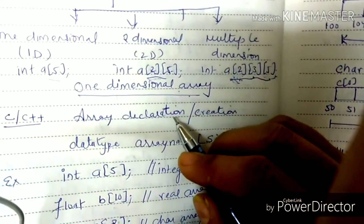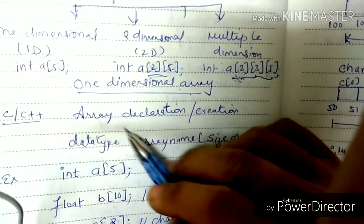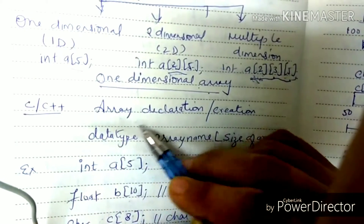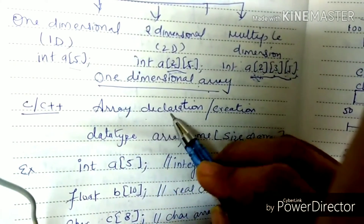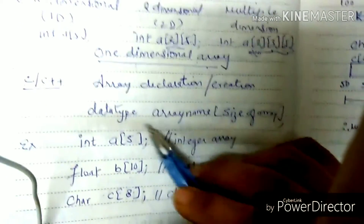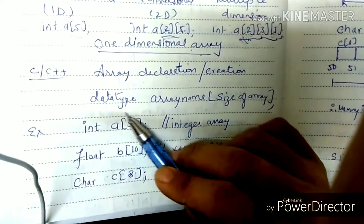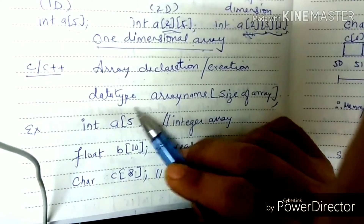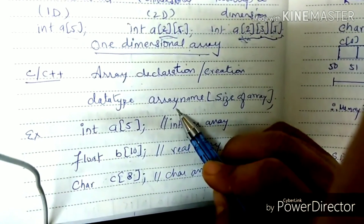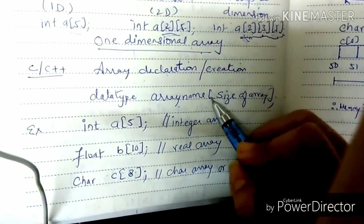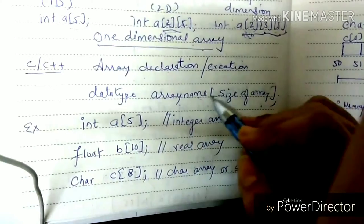The definition is the same — it is a collection of similar type elements. Now, in C and C++, how do we declare or create an array? First, we have to write the data type, then the name of the array, then the size of the array. The size of the array is written in square brackets.